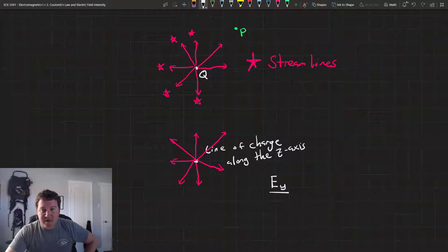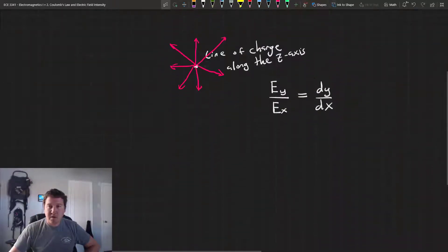The equation for the vector field of all of these streamlines is this: the y component of the electric field divided by the x component of the electric field is equal to dy over dx.